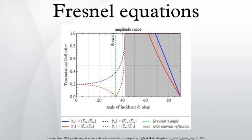S and P polarizations: The calculations below depend on the polarization of the incident ray. Two cases are analyzed. The incident light is polarized with its electric field perpendicular to the plane containing the incident, reflected, and refracted rays — that is, in the plane of the diagram above. The light is said to be S polarized, from the German 'Senkrecht'. The second case is incident light polarized with its electric field parallel to the plane described above, which is described as P polarized.